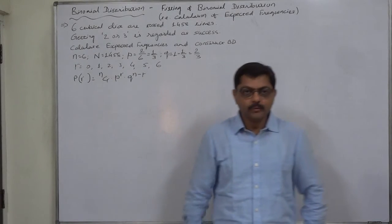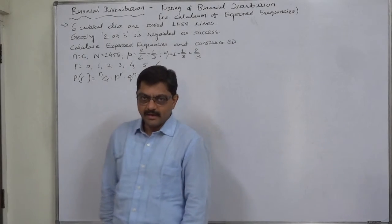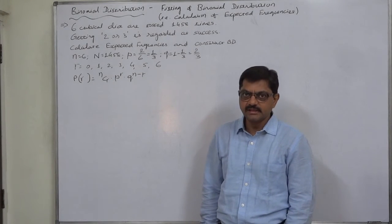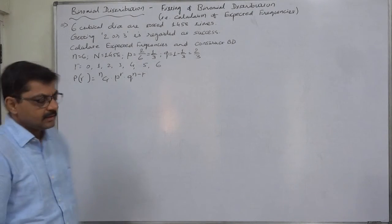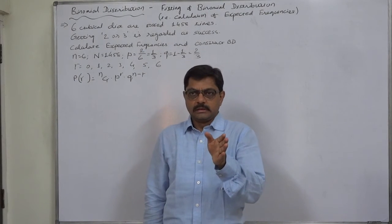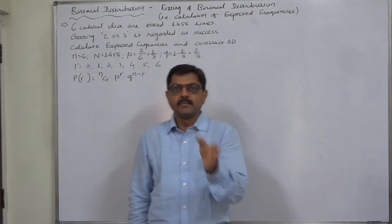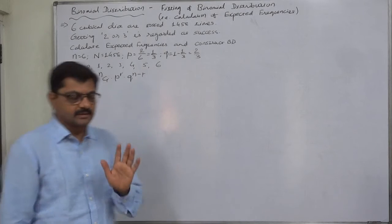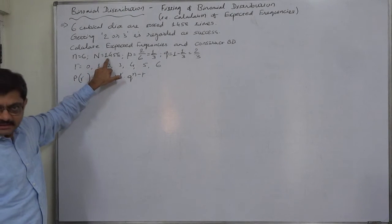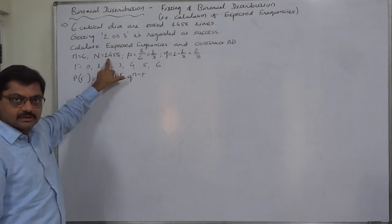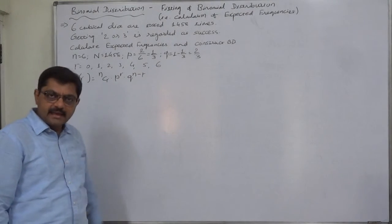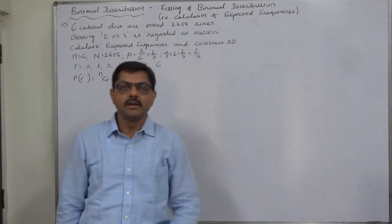Hello and welcome. This is a new case in binomial distribution: the fitting of a binomial distribution, meaning the calculation of expected frequencies through binomial distribution. The expected value equals the grand total multiplied by the respective probability. In fitting a distribution, we multiply capital N — the total frequency sigma F — by the respective probabilities calculated through the binomial formula. This is called fitting of a binomial distribution.